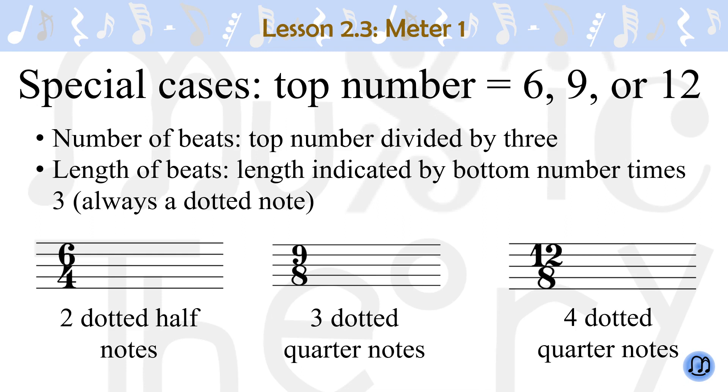In 9-8, there are 9 divided by 3, which equals 3 beats of length 8th note times 3, or dotted quarter note. In 12-8, there are 12 divided by 3, which equals 4 beats of length 8th note times 3, or dotted quarter note. Notice that in each of these cases, the beat is always a dotted note.